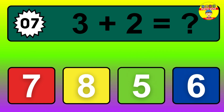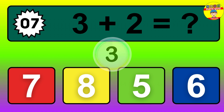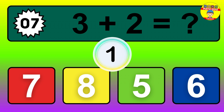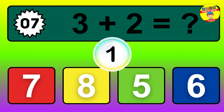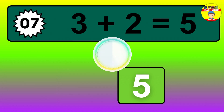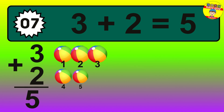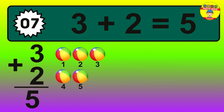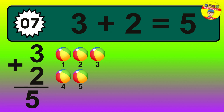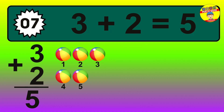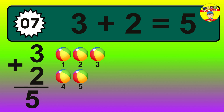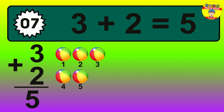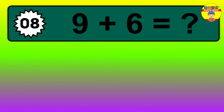Question 7. 3 plus 2 equals what? So the answer is 3 plus 2 is 5. Let's count it. 1, 2, 3, 4, 5.